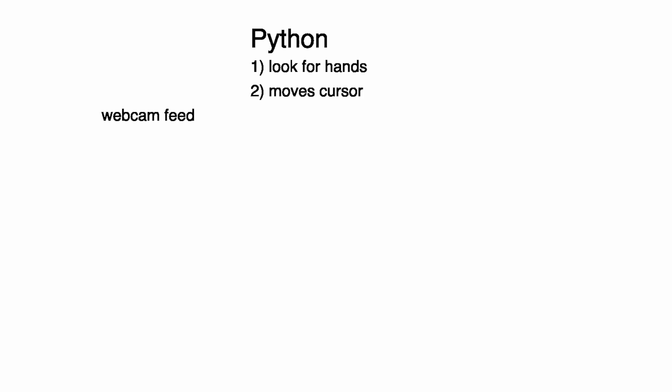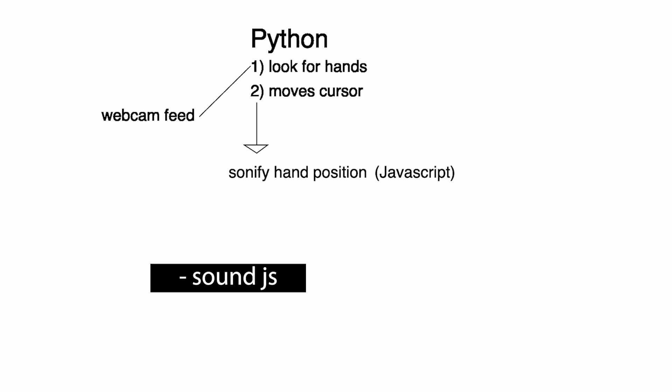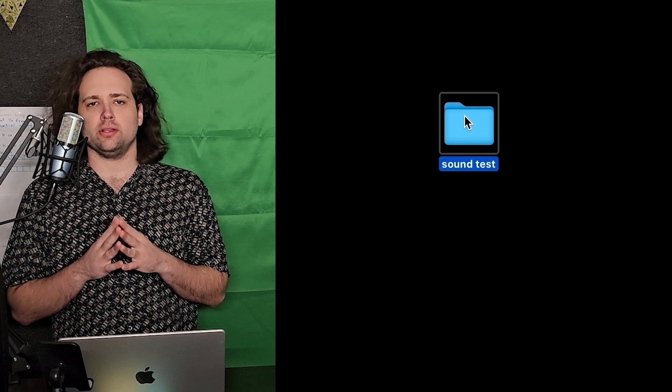I'm going to try to recreate that with software. Here's an overview of the whole program: I broke it up into two parts. There's one script which processes the webcam feed frame by frame, trying to detect hands and then move the cursor based on hand position. There's a different script which sonifies the hand position — that part is written in JavaScript. The hand-detection and cursor-moving part is written in Python. I'll be using p5.sound for audio and MediaPipe for hand detection.